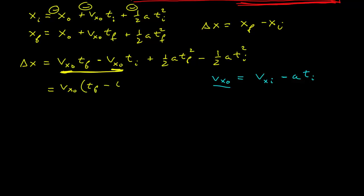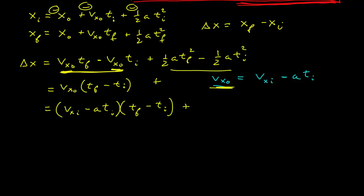I pull out the velocity at t equals zero from both terms, getting (t_final minus t_initial). Now I substitute in: I get my initial velocity minus my acceleration times my initial time, times (t_final minus t_initial), and then I bring down the two remaining terms: one half a·t_final squared minus one half a·t_initial squared.